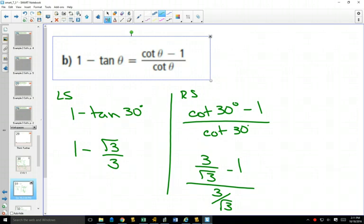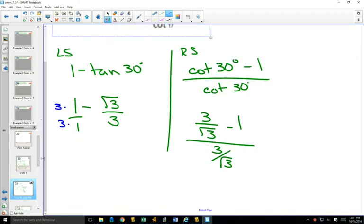So on the left side, how do I put those together to get a single fraction? I need a common denominator, and then I could add. So where the 1, which is right now 1 over 1, if I multiply top and bottom by 3, I would get a common denominator, and on the left side, I could get a single fraction. It'll be 3 minus root 3 over 3.